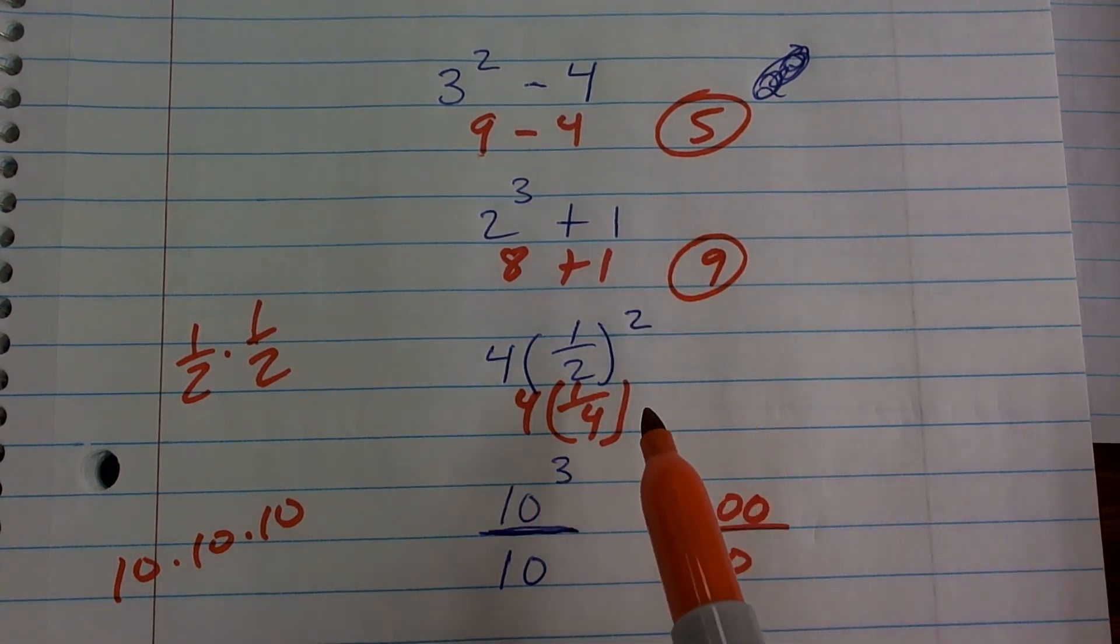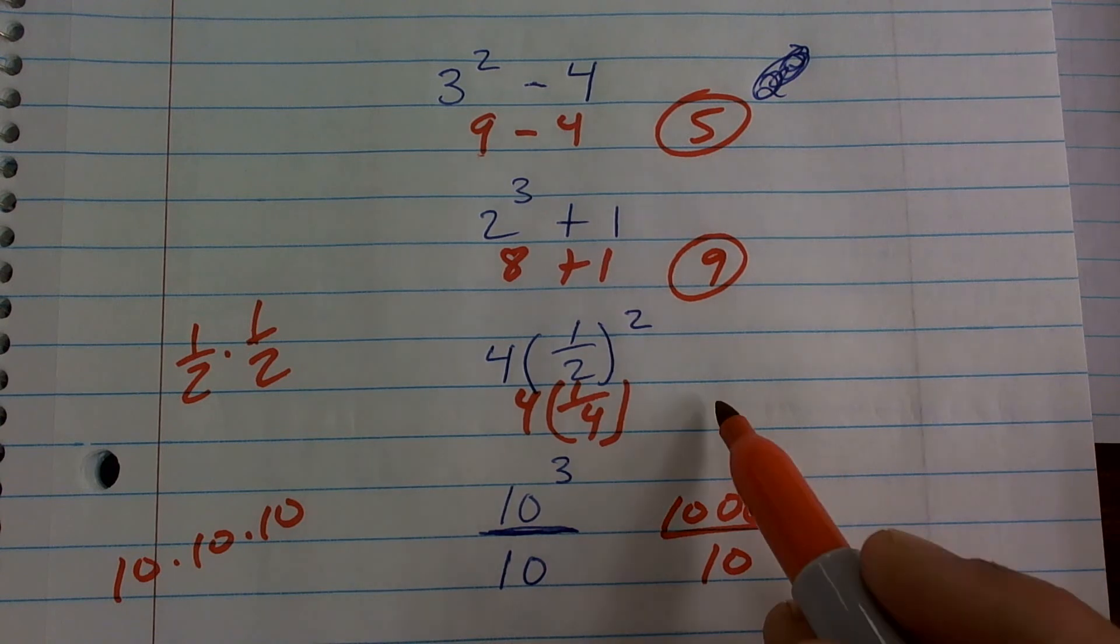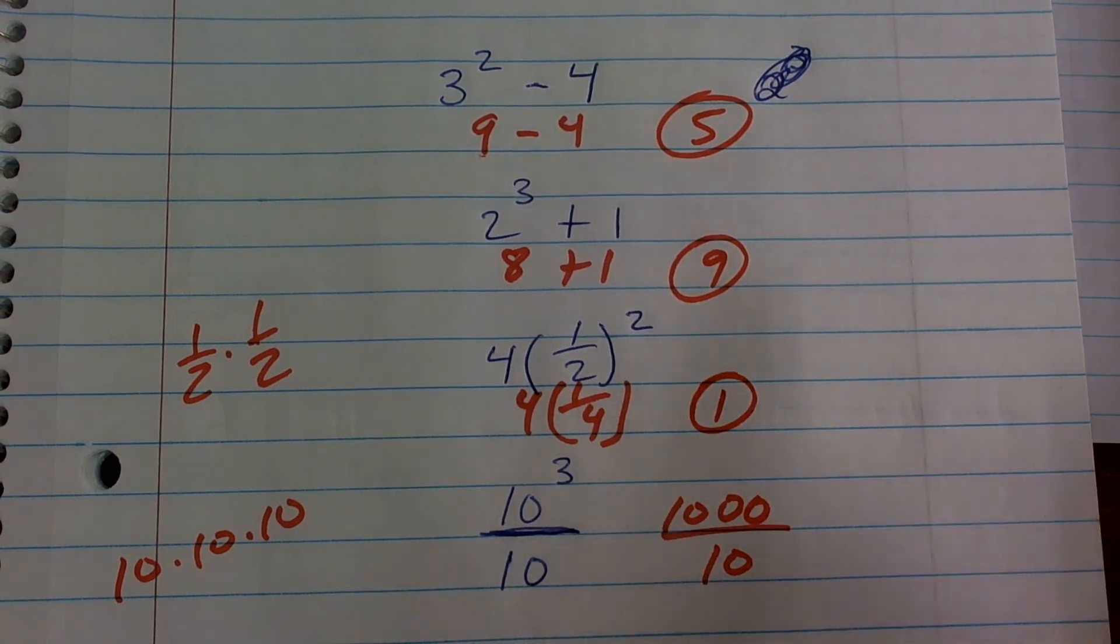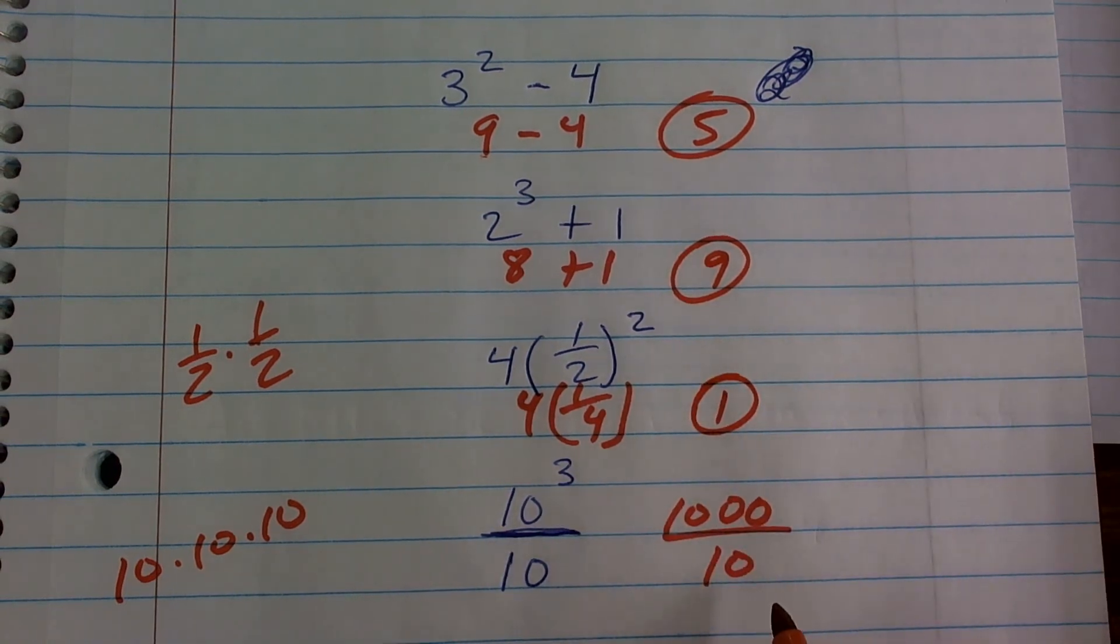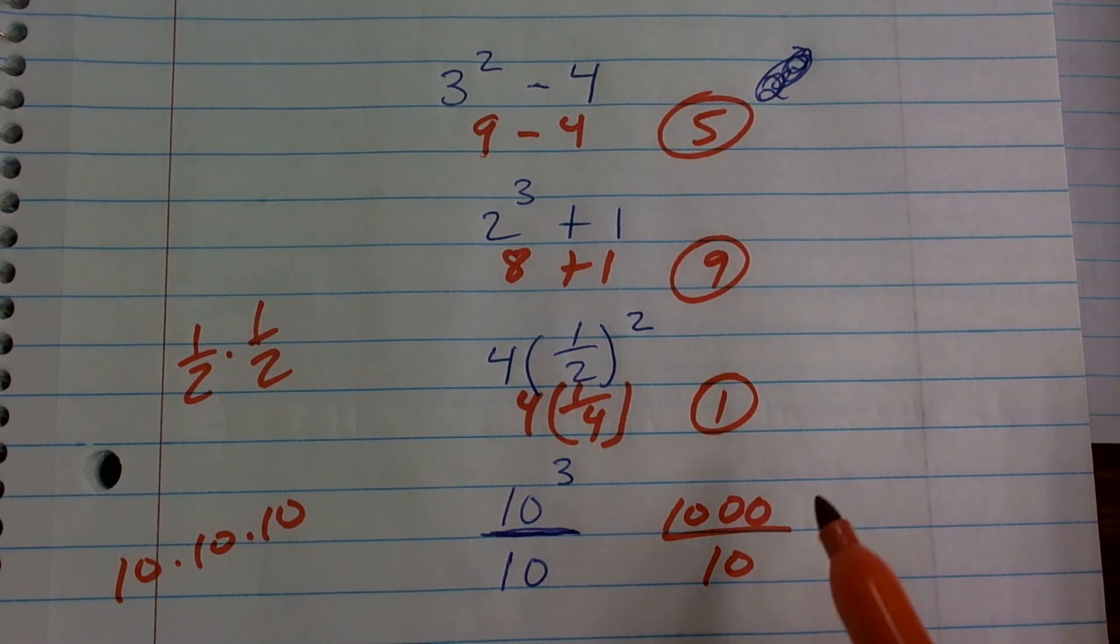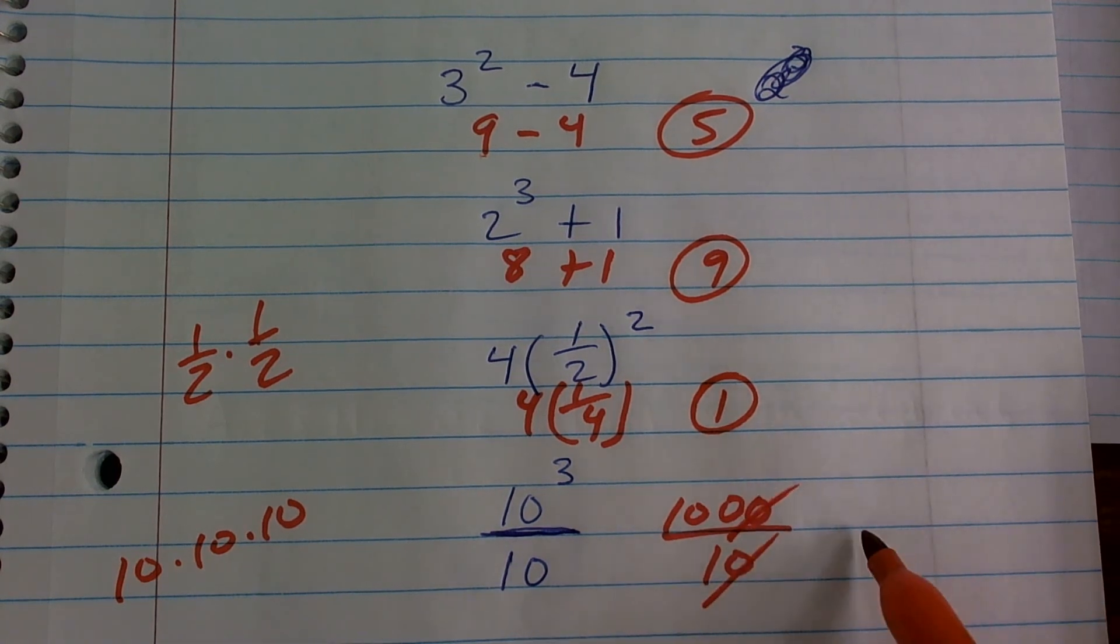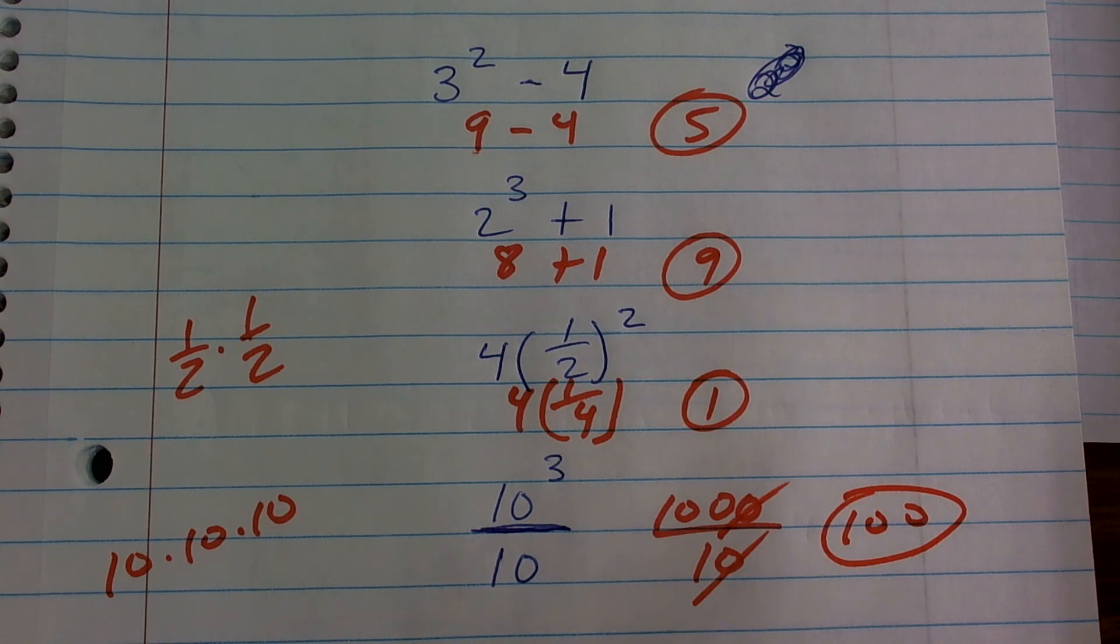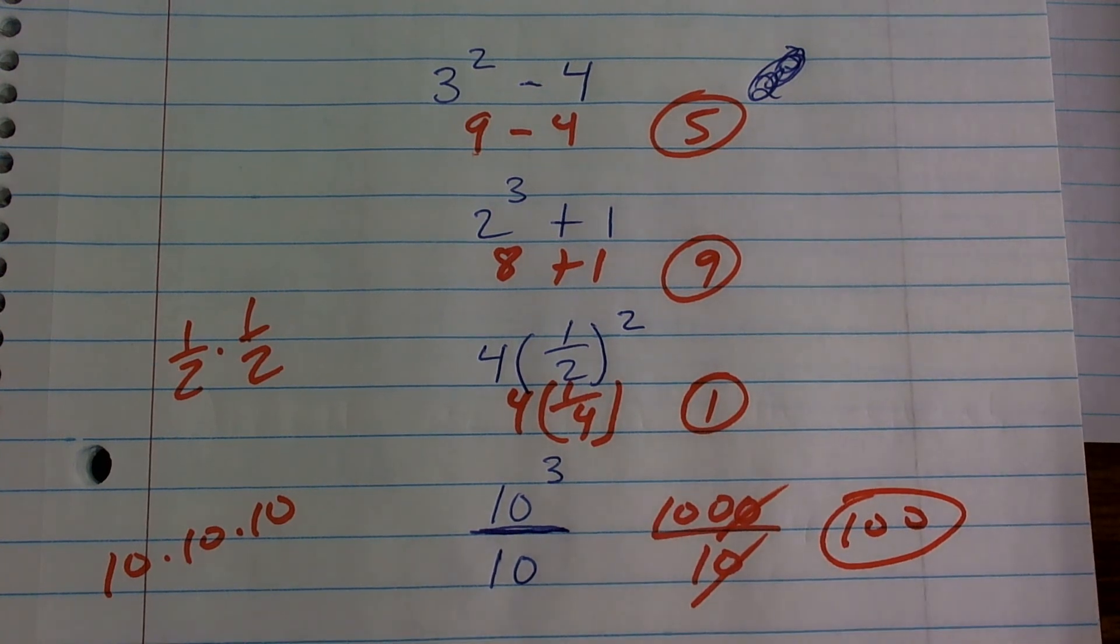4 times one-fourth—these are multiplicative inverses of each other, so therefore my answer is 1. And then 10 divided by 10, we can drop our zeros, and that's going to leave me with 100. So there you go. That's how we can use our powers when having two different terms.